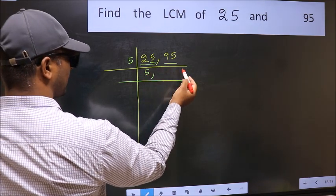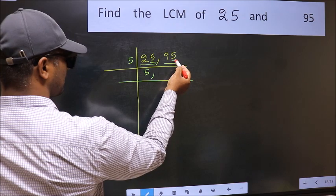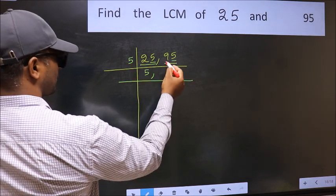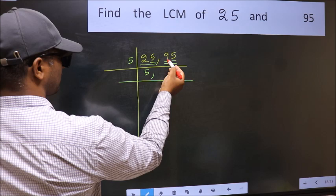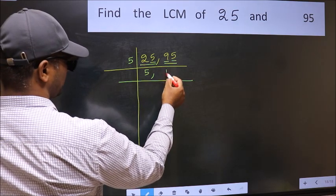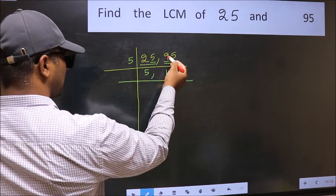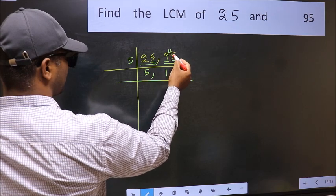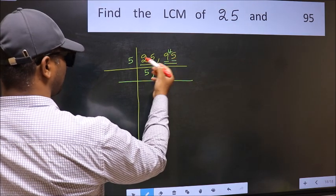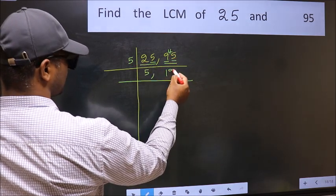The other number 95, last digit 5, so this is divisible by 5. First number 9. A number close to 9 in 5 table is 5 times 1 is 5. 9 minus 5 is 4, 4 carried forward 45. When do we get 45 in 5 table? 5 times 9 is 45.